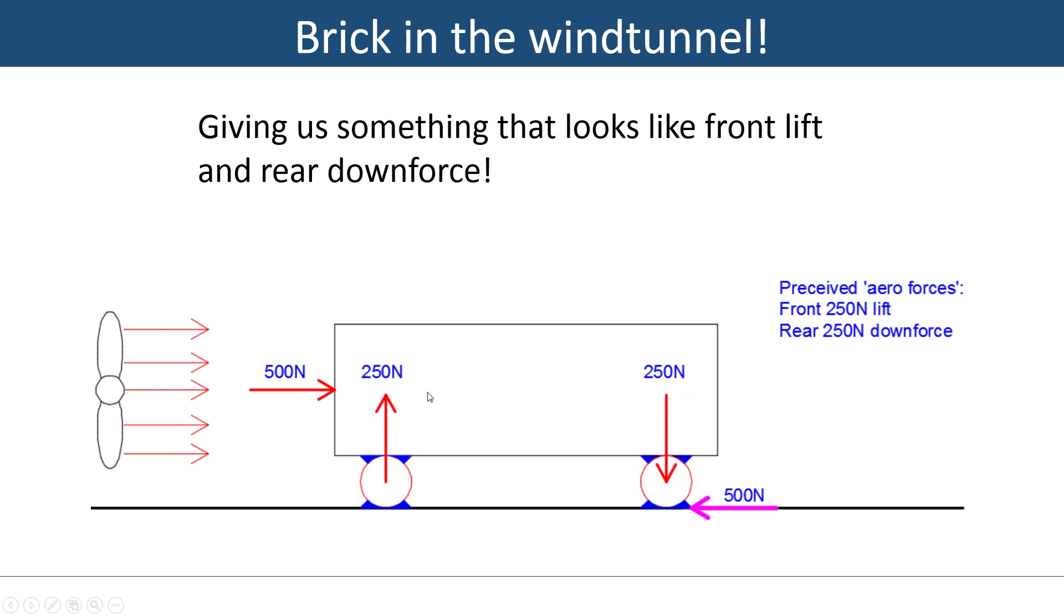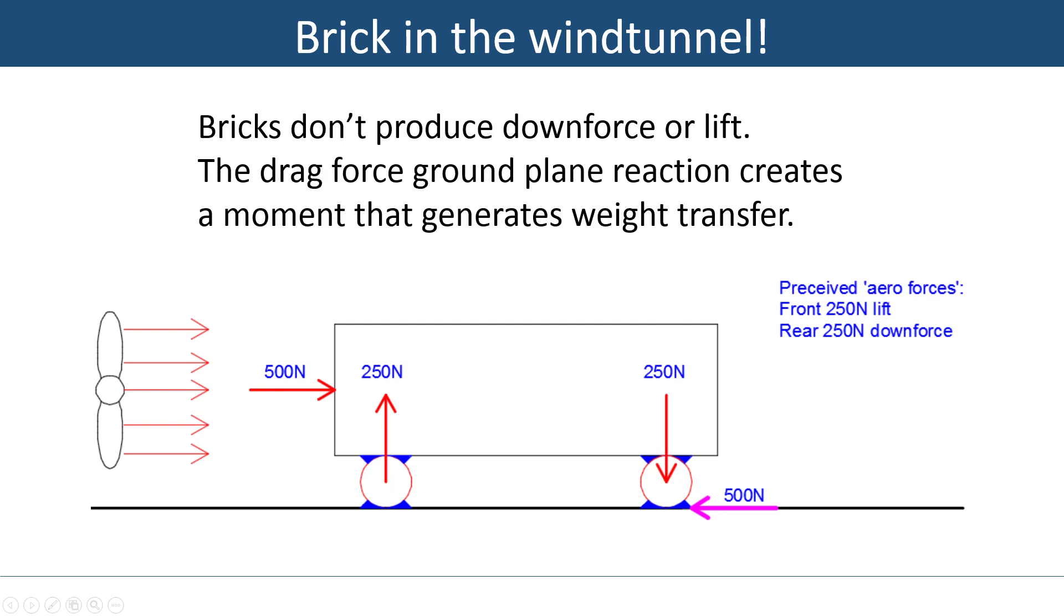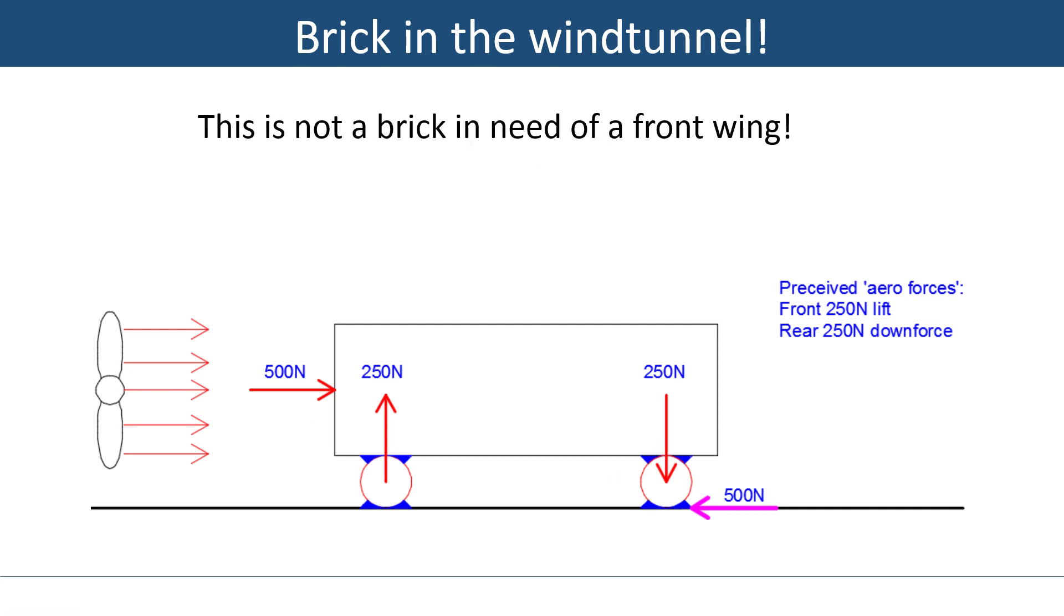Of course it doesn't have that, but it's purely the result of fixing the whole thing to the floor. This drag moment wants to tip it backwards, lifting up the front and pushing down on the rear. So it's pretty clear that the brick isn't responsible - it doesn't have aerodynamic properties like that. It's only caused, that's very important, by this drag force applying off the ground, creating a moment. This brick is not in need of a front wing to balance it out, it's stupid. It's a brick, it doesn't have any downforce that needs compensating or lift that needs compensating.